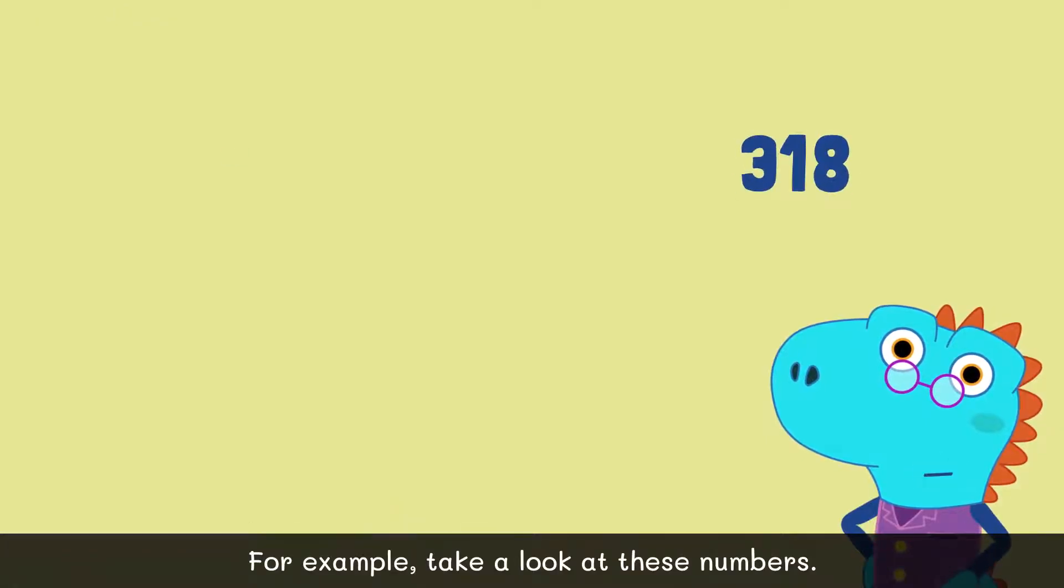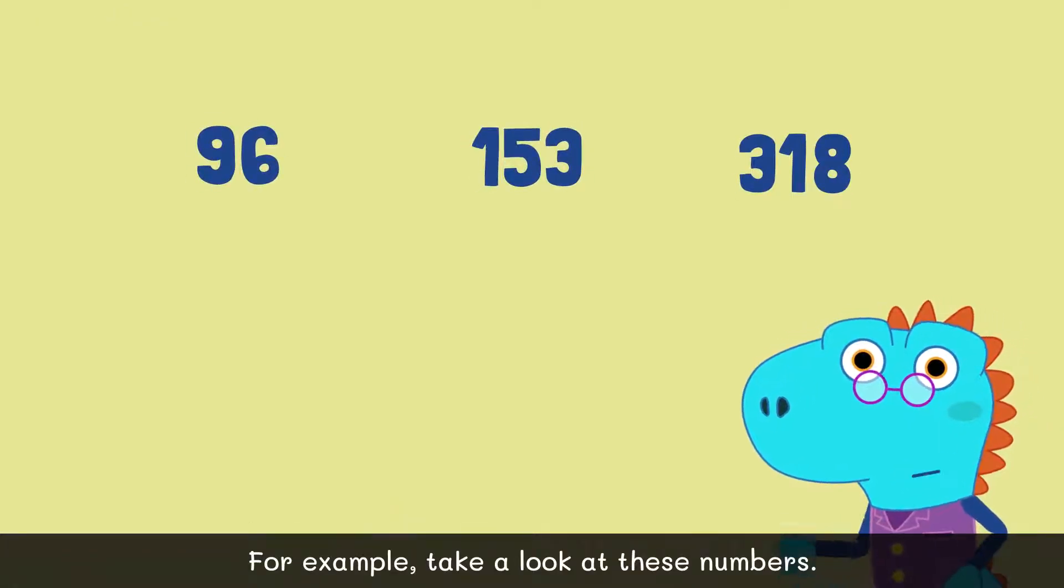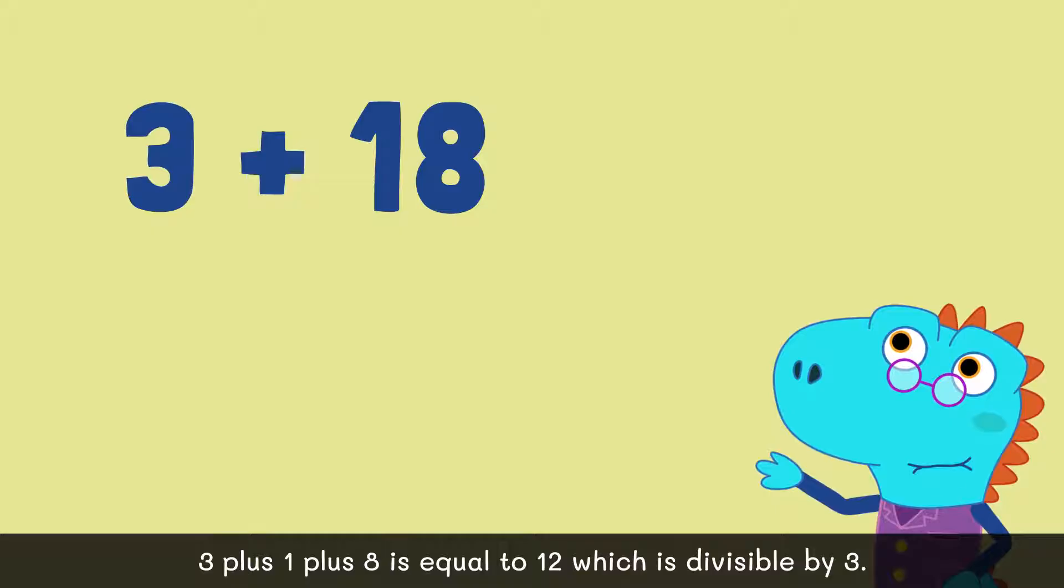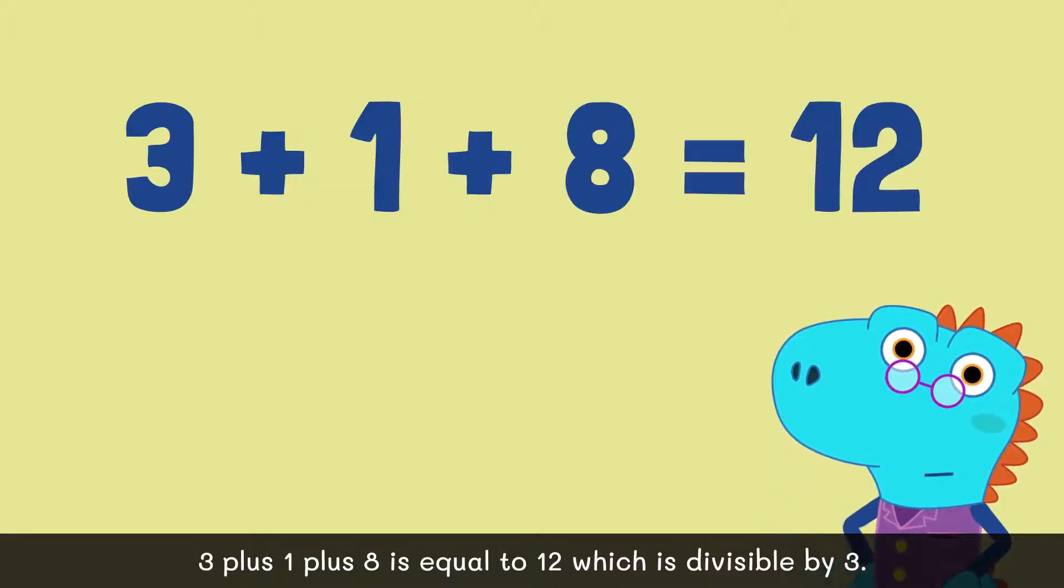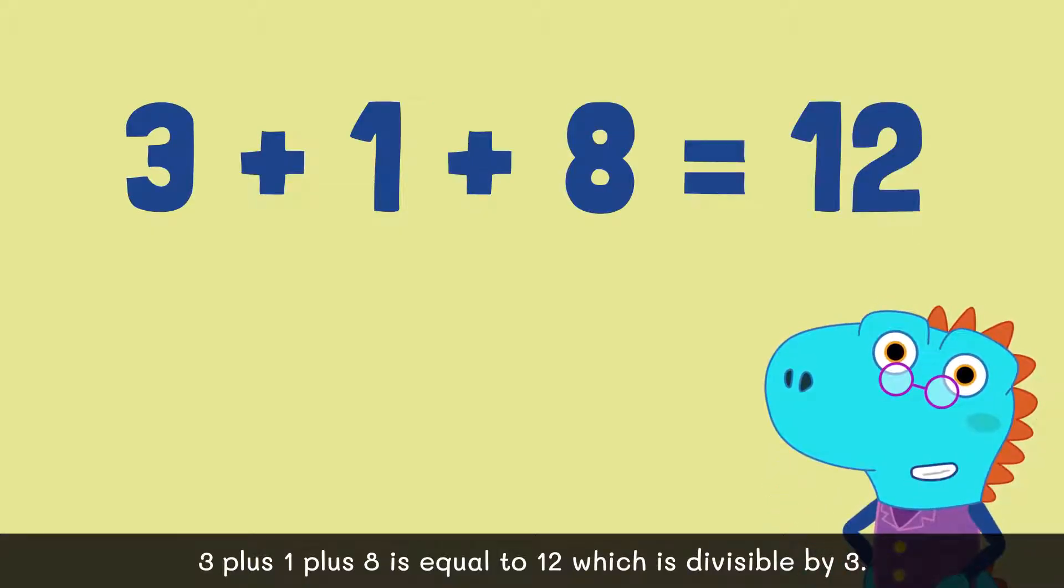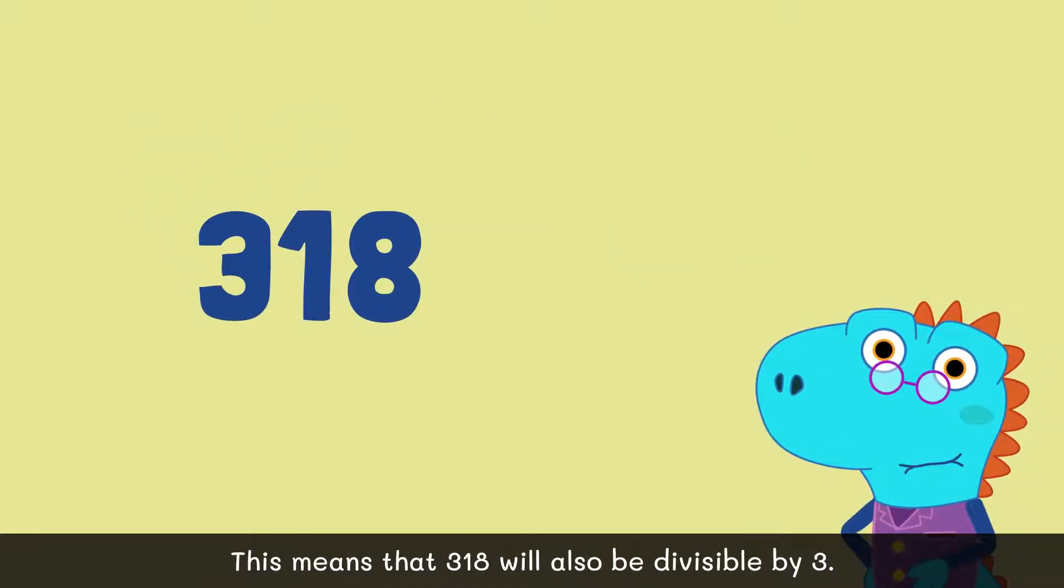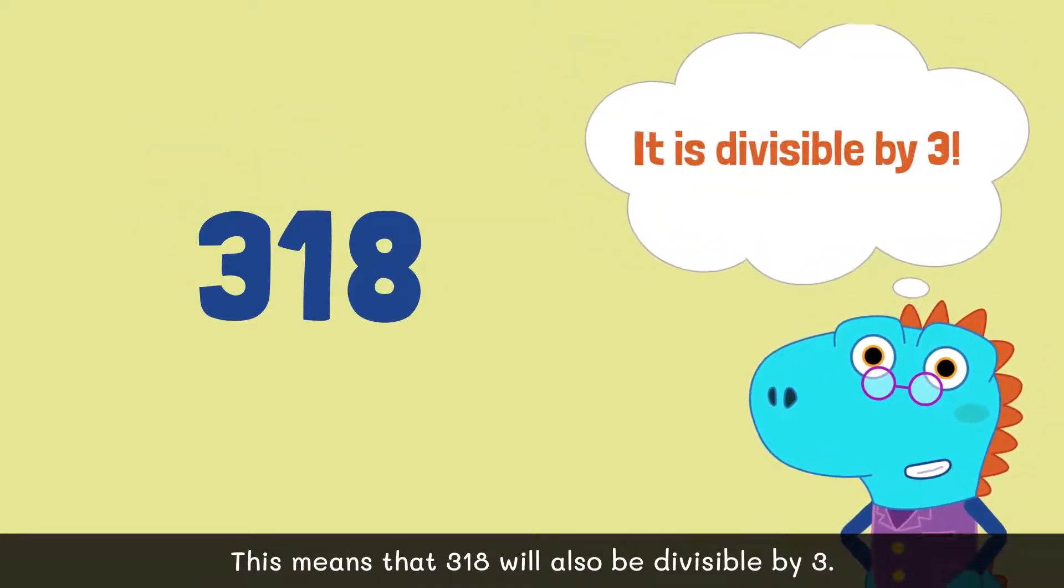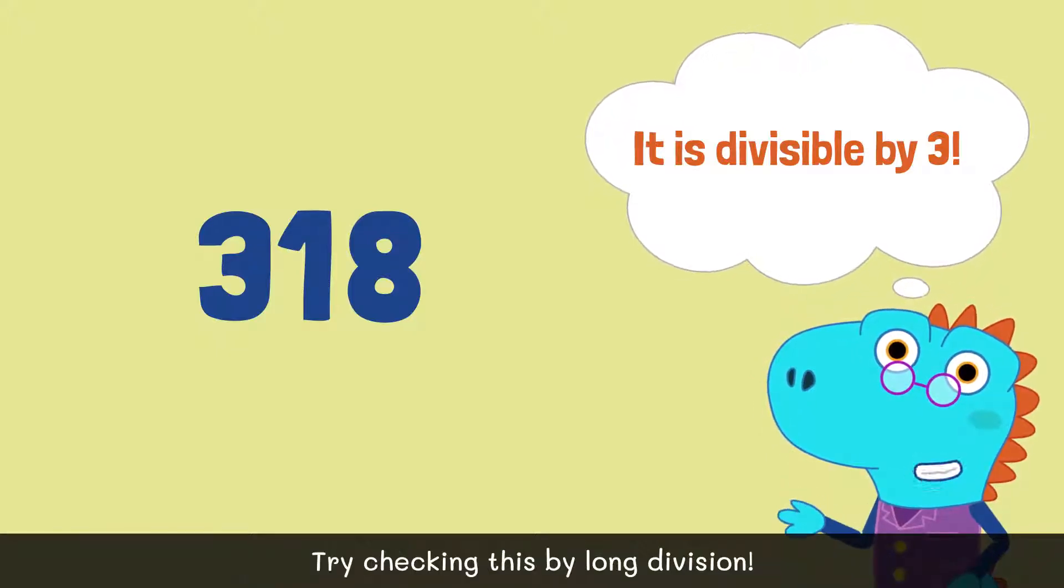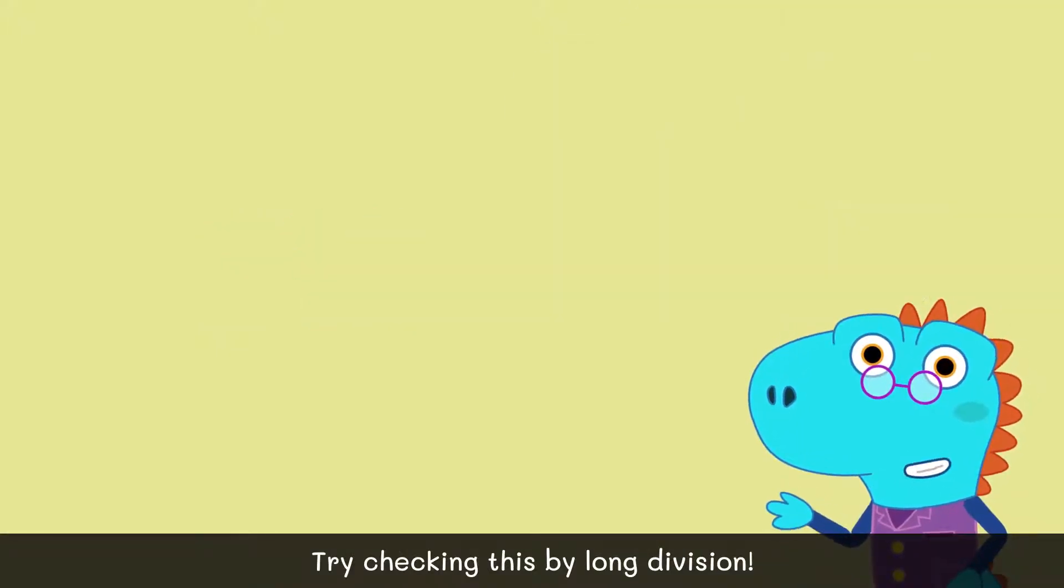For example, take a look at these numbers. 3 plus 1 plus 8 is equal to 12, which is divisible by 3. This means that 318 will also be divisible by 3. Try checking this by doing some long division.